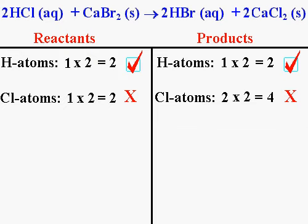We can stop right here. If just one atom is not balanced in a chemical equation, the entire chemical equation is unbalanced. So I could stop now and say this equation is not balanced because the chlorine atoms aren't balanced. However, I'm going to continue the process just for illustration's sake.